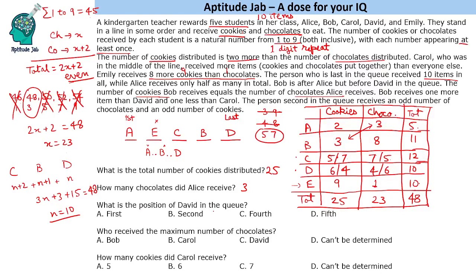Answering the remaining questions: David is fifth in the queue. The maximum number of chocolates was received by Bob. As for how many cookies Carol received, we cannot determine that number from the given information alone. This completes the solution to the set.